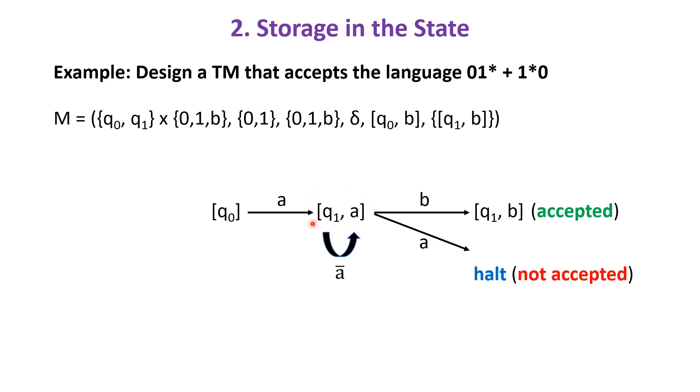Now the machine is at the state [q1, a]. If the next symbol is B, then M goes to state [q1, B], which is an accepting or final state.